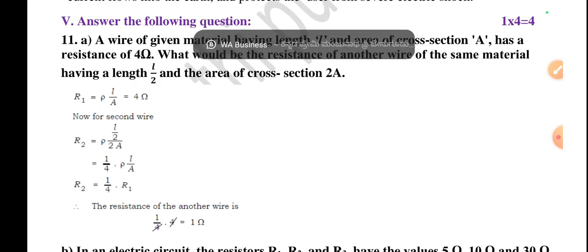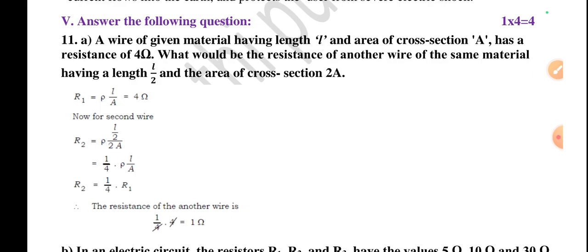In R1 it was 4 ohm, then reduced to 1 ohm. Why did it reduce? The length of the wire also reduced and the cross-section increased. If cross-section increases, resistance decreases.